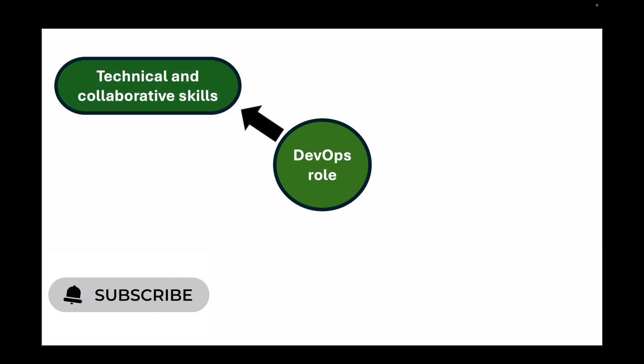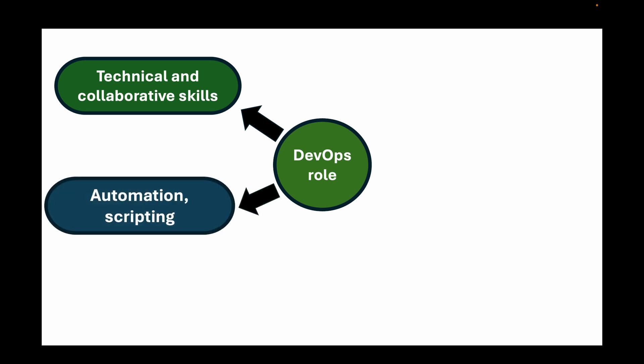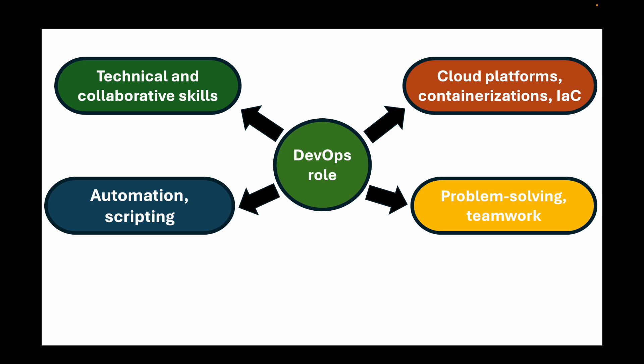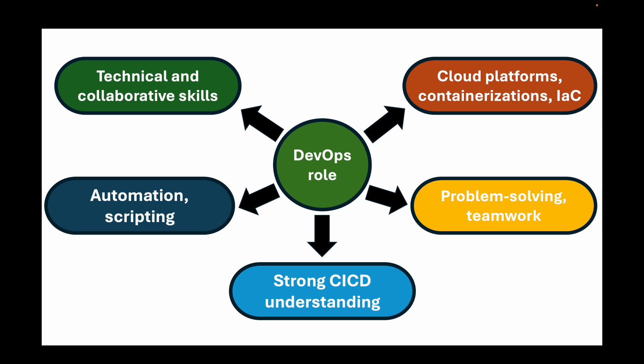A DevOps role requires a mix of technical and collaborative skills. Employers look for expertise in automation scripting like Bash or Python, cloud platforms like AWS, Azure, or GCP, containerization like Docker or Kubernetes, and infrastructure as code like Terraform or Ansible. Beyond these tools, they also value problem-solving, teamwork, and a strong understanding of CI/CD pipelines.